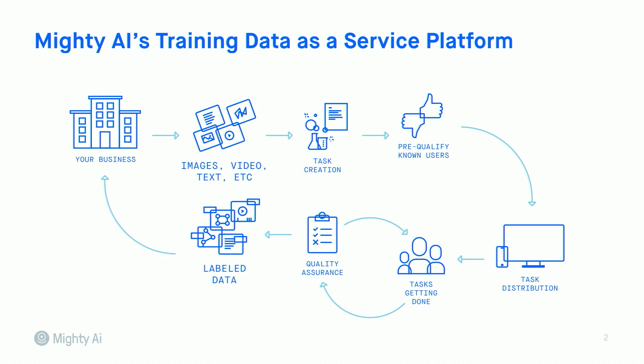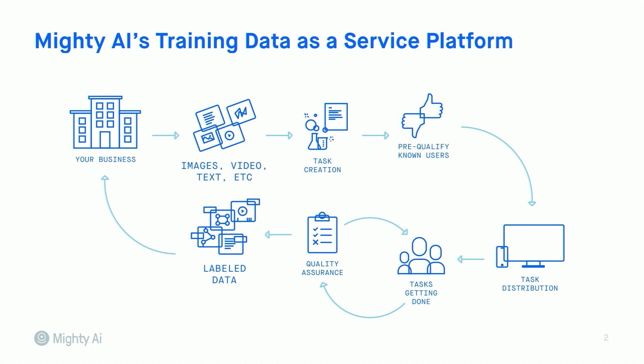The task distribution step is where we decide who in that community are the right people to do a task, and we push that to them. Whether they're on desktop or mobile, we'll send them a notification saying there's an available task. Tasks get done — this is where we pay individuals to do tasks on our platform. With any system where you're paying people, there's fraud, and there's calibrating new people against others, which is what the quality assurance loop is about. We have our own internal models on user reputation and data quality to assess the likelihood that an answer is correct, even if we don't have a known correct answer. What comes out of the whole system is labeled data, ready to be used as training data.